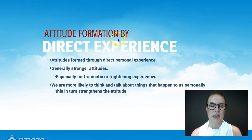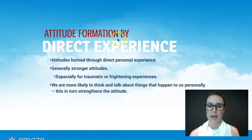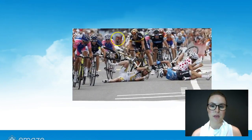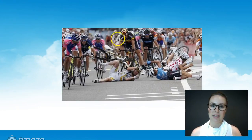The second way is by direct experience. Attitudes are formed through direct personal experience and these are really, really strong. This is especially true if you've had some kind of traumatic or really frightening experience — that's going to quite strongly affect an attitude you have about something. We're more likely to think and talk about things that happen to us personally, and because of that, this makes the attitude quite strong. So if you personally have been riding your bike on the road and you've had some kind of massive accident, that's probably going to affect how you feel about riding a bike on the road.